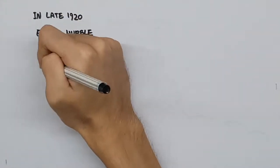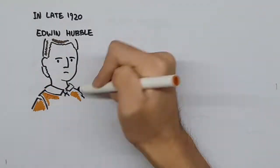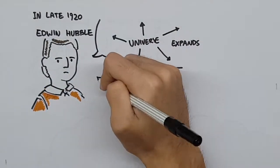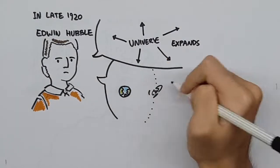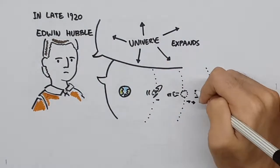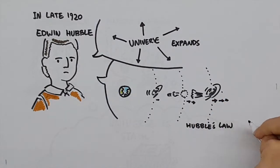But in the late 1920s, Edwin Hubble discovered that the universe was in fact expanding. Not only that, but Hubble observed that the further galaxies were, the faster they were moving away from Earth. This is called Hubble's law.